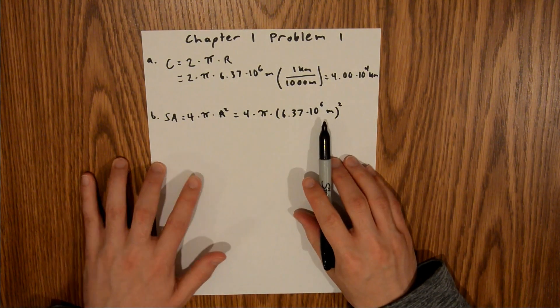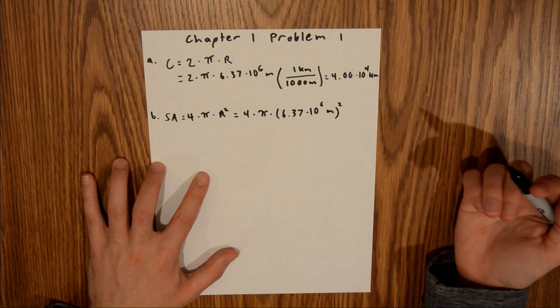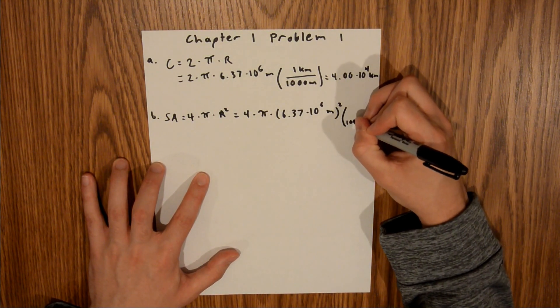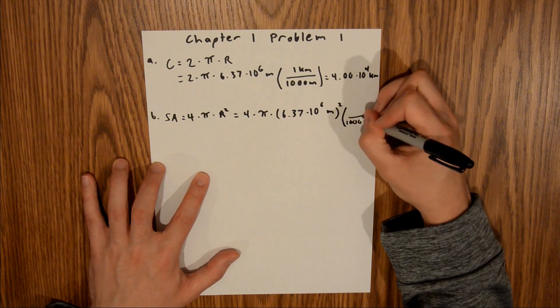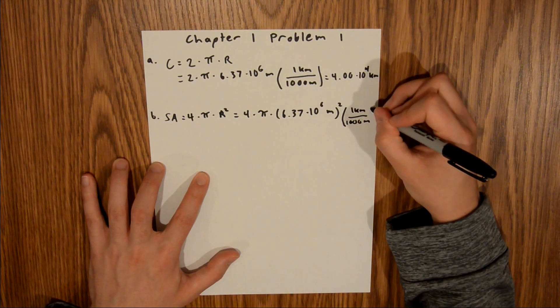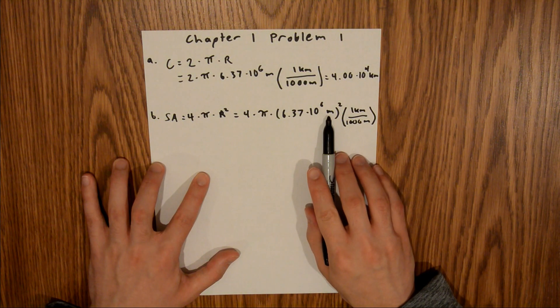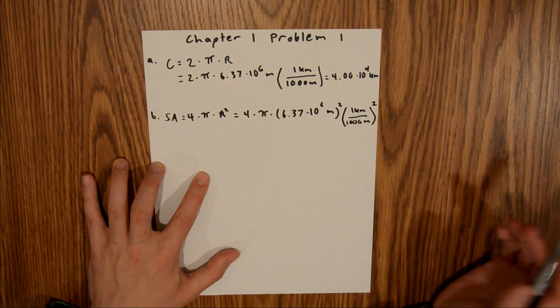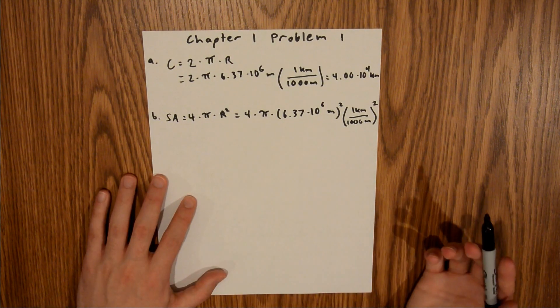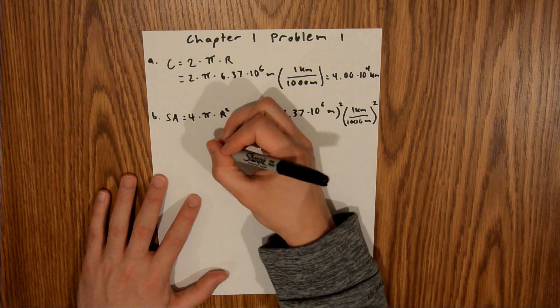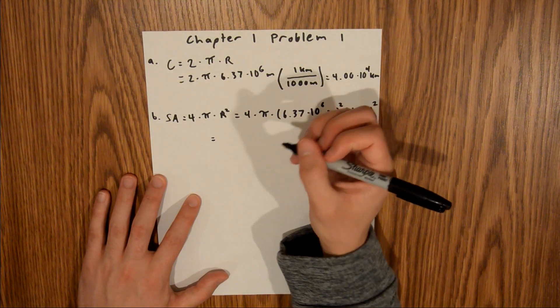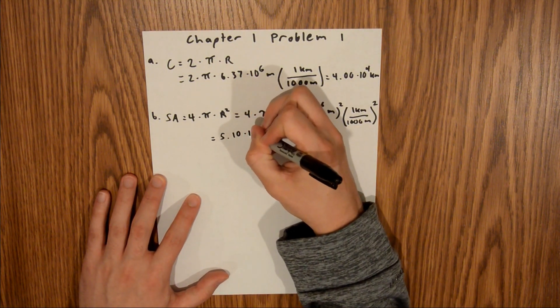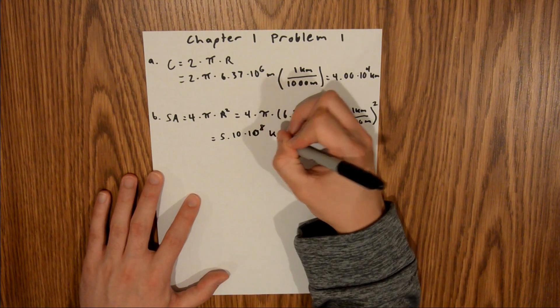And again, we need to do a unit conversion to kilometers, because that's what the problem asks for. And so we have, again, 1,000 meters in 1 kilometer. And in order for these units to work, since this is going to be meters squared, we're going to have to square this entire quantity, and that will result in kilometers squared, as we are asked for. And so if you plug that into your calculator, you should find that the surface area is equal to 5.10 times 10 to the 8th kilometers squared.